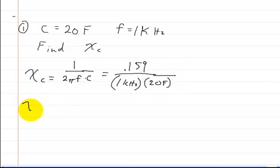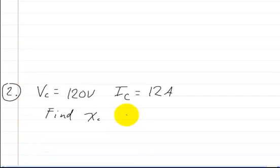If you plug that into your calculator, you're going to come out with 7.96 times 10 to the negative 6 ohms. And that's how you would solve for that. Now, let's try to solve for this one.